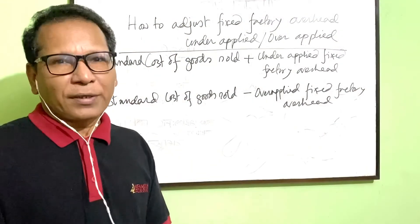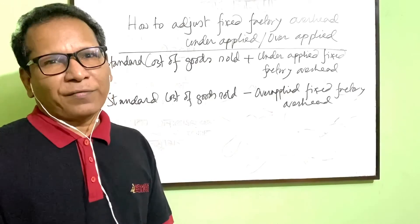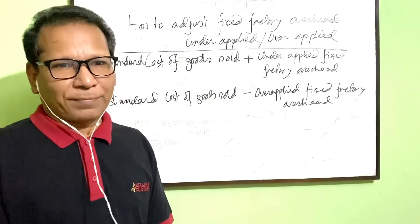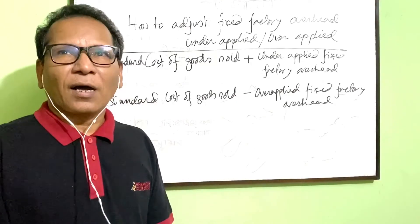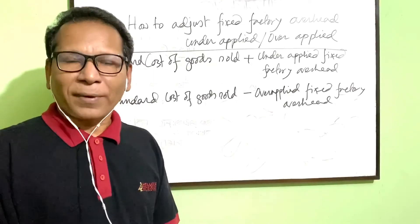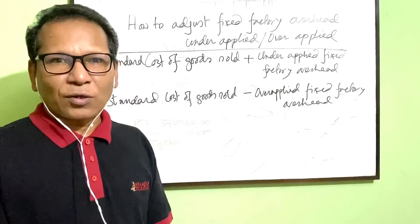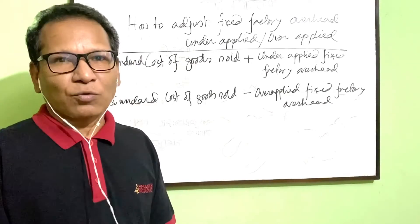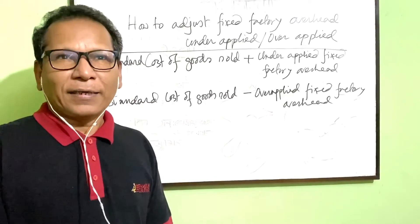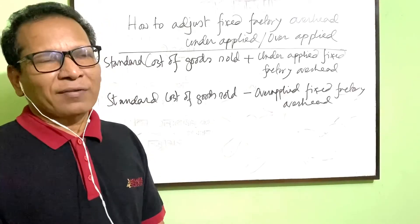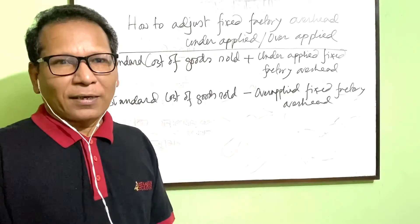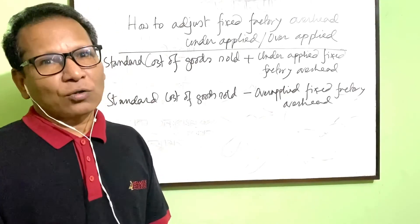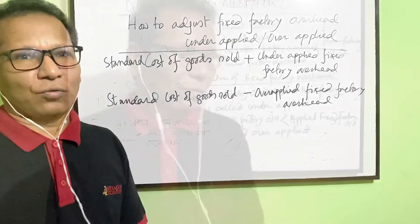Now we see how to adjust fixed factory overhead over applied and fixed factory overhead under applied. If there is fixed factory overhead over applied, this amount should be deducted from standard cost of goods sold. If there is fixed factory overhead under applied, this amount should be added to standard cost of goods sold.